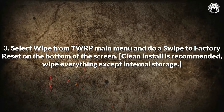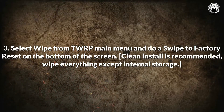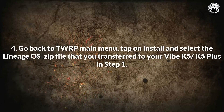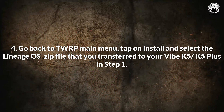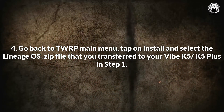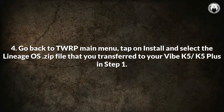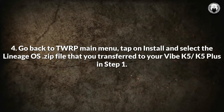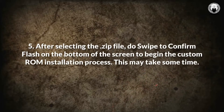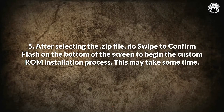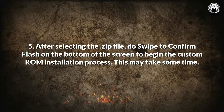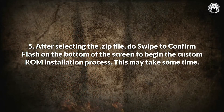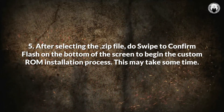A clean install is recommended. Wipe everything except internal storage. Step 4: Go back to the TWRP Main Menu, tap on Install and select the Lineage OS ZIP file that you transferred to your Vibe K5 and K5 Plus in Step 1. Step 5: After selecting the ZIP file, swipe to confirm flash at the bottom of the screen to begin the custom ROM installation process. This may take some time.